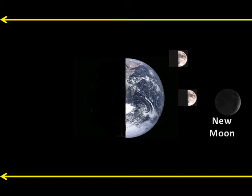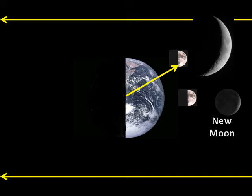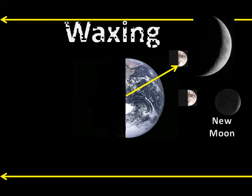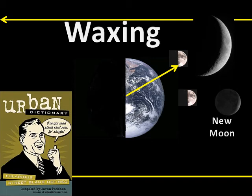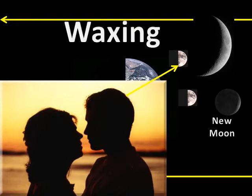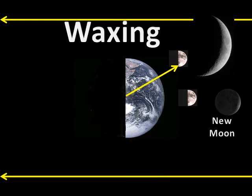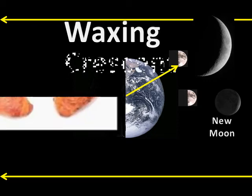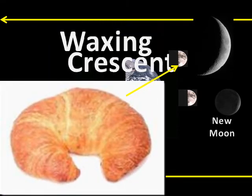The moon continues to orbit the earth. Upon reaching this position, we see more of the lit side of the moon. We use two terms to describe this moon phase. The moon is said to be waxing. Waxing just means more light. The light area does appear to be getting bigger when compared to the new moon. After waxing, the second term is crescent. The moon is shaped like a croissant roll or a crescent wrench.